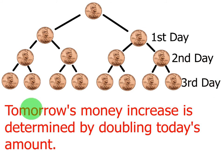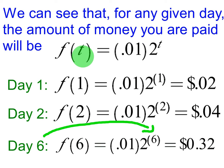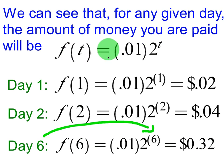This illustrates the concept that tomorrow's money increase is determined by doubling today's amount. For example, on the fourth day, you will be paid 16 cents by doubling the amount from the third day. We can see that for any given day, the amount of money you are paid is given by the equation: F of t equals 0.01 times 2 to the t.